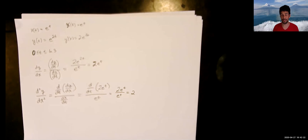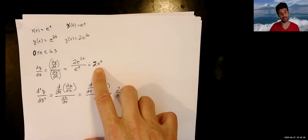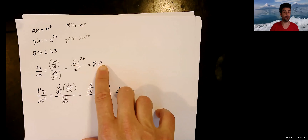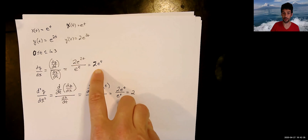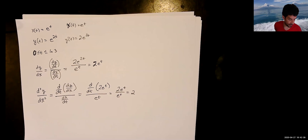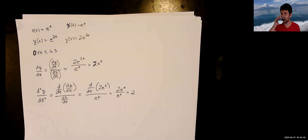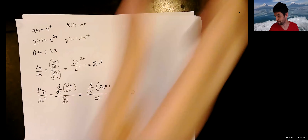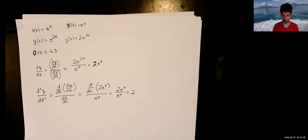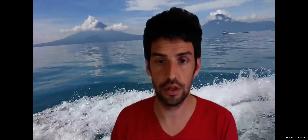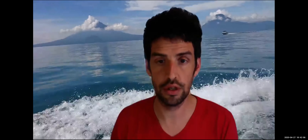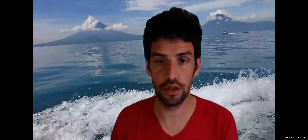This tells us the exact same thing that our derivatives always tell us. If we want the slope of the tangent line at a point along the path, and we know the value of t that gets us to that point, this expression gives us the slope. The second derivative tells us concavity. They still have the same meaning.